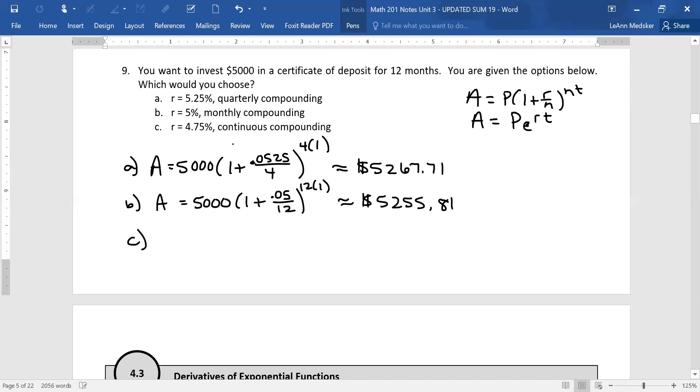And then the last one is we're losing another quarter of a percent, but we're compounding continuously. So the gist of this is that we want you to see that the rate you get is actually really important. 4.75 times 1 for the year. And this comes out to $5,243.23. So the best option is A. That gives us the best return on our investment.